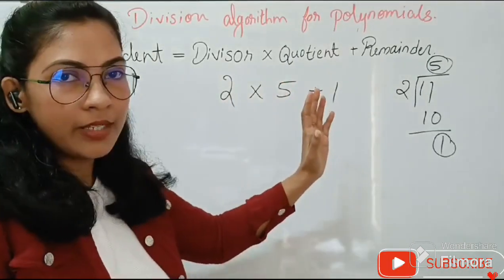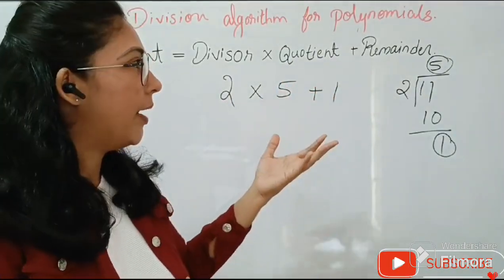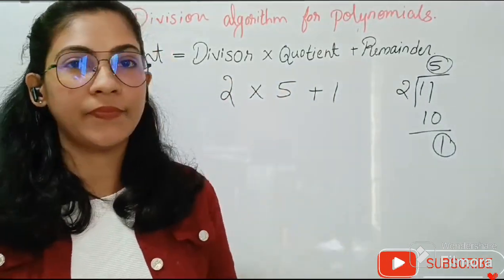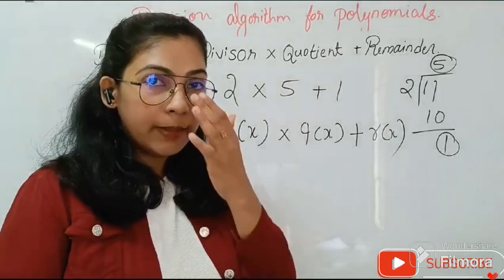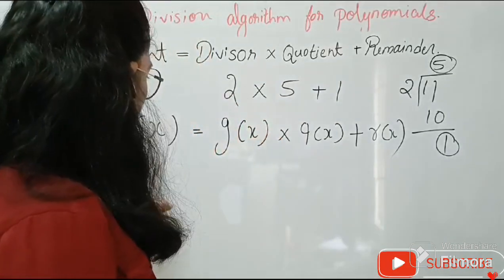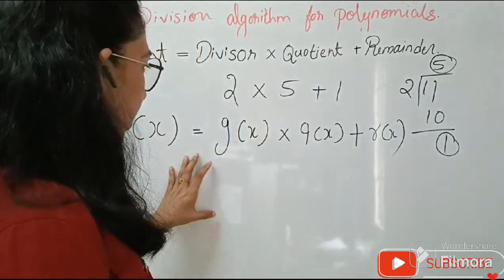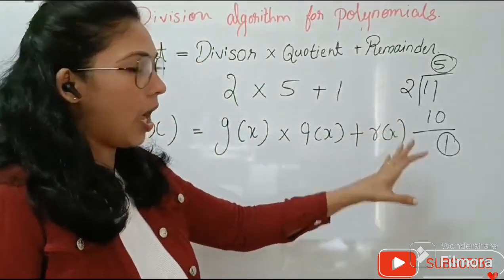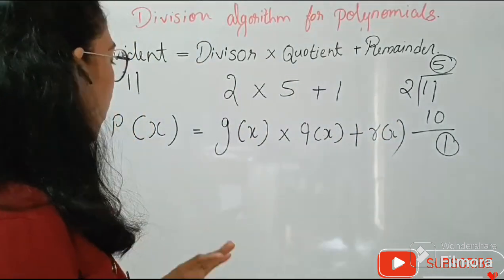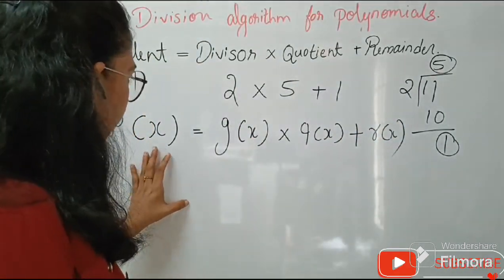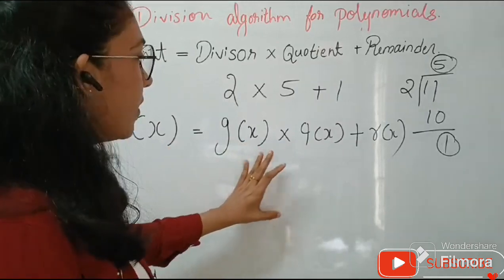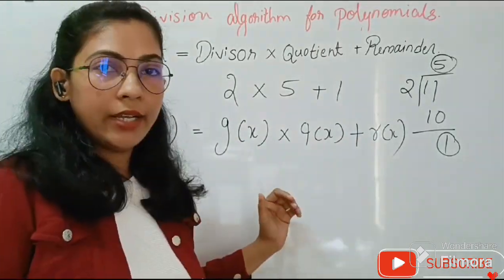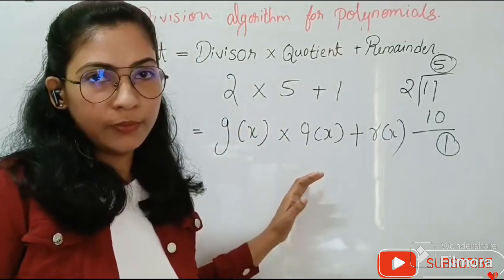In the same way, we can divide any polynomials. For any polynomial, P of X is equal to G of X into Q of X plus R of X. Getting an example, I will explain it for you.